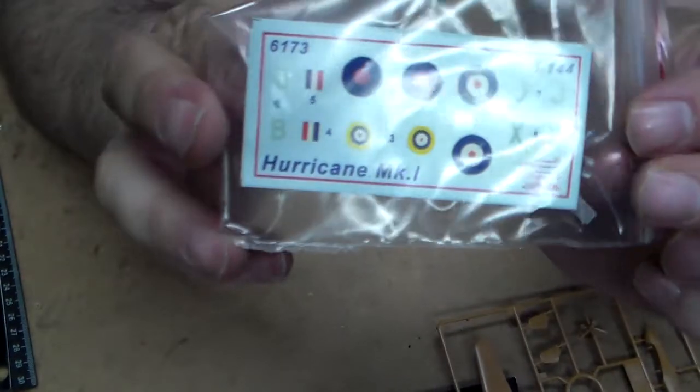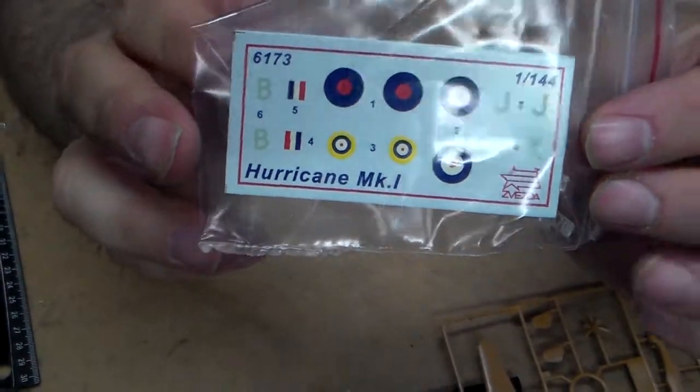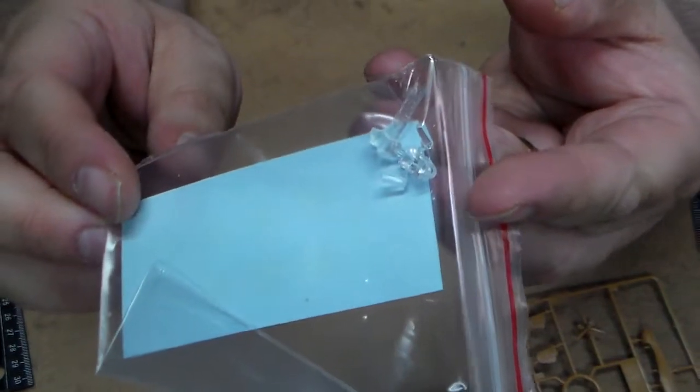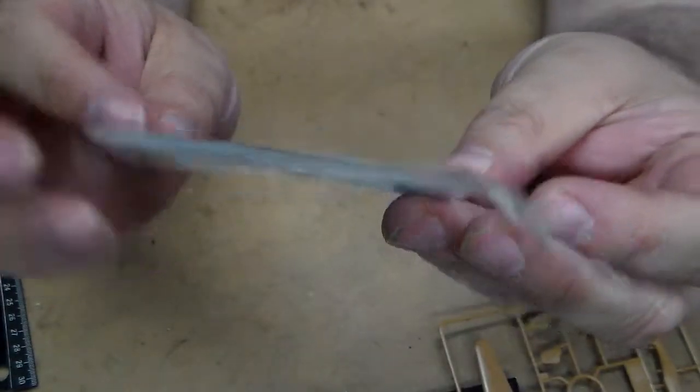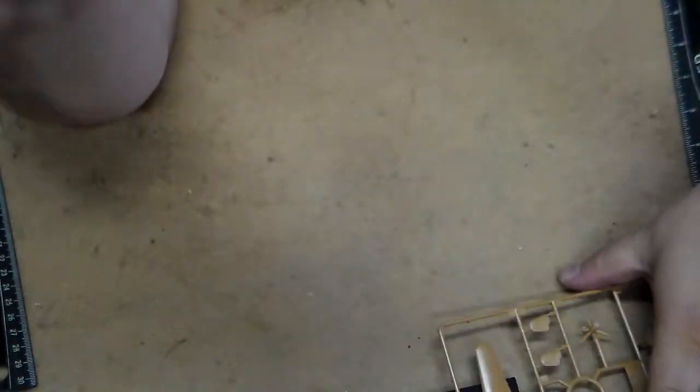On here, you have got the decals there. Pretty straightforward. You also have the canopy in there. Of course, you're going to have to paint the little lines in there. So, you're going to need a fine, fine brush for that.